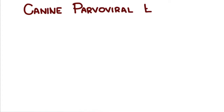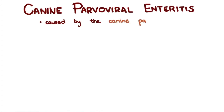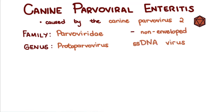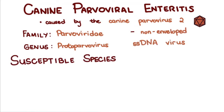Canine parvoviral enteritis is caused by the canine parvovirus type 2, belonging to the genus Protoparvovirus in the family Parvoviridae, a non-enveloped, single-stranded DNA virus. Susceptible species include many members of the order Carnivora, though in most of these species, infection is subclinical.